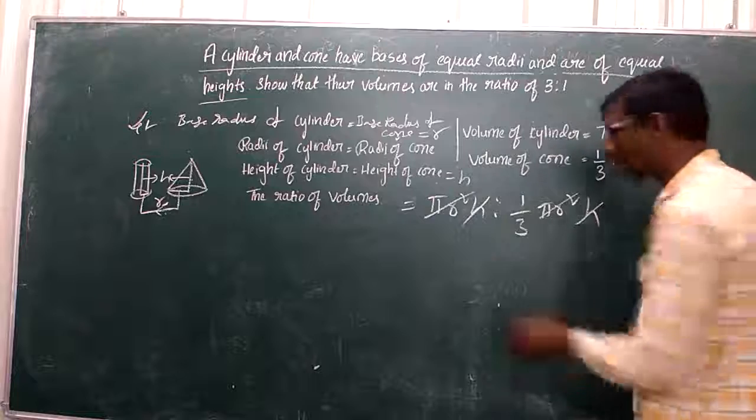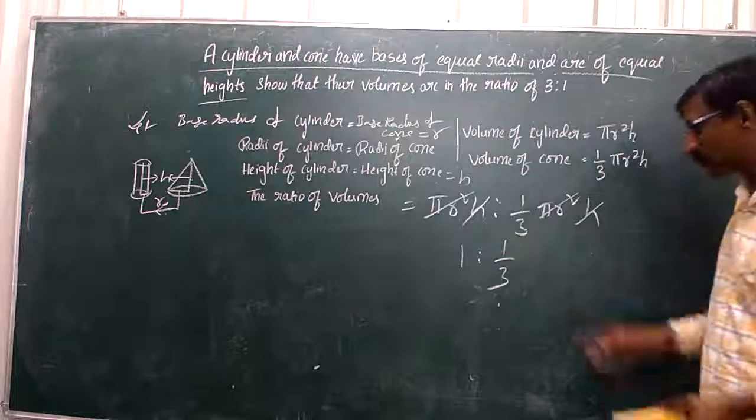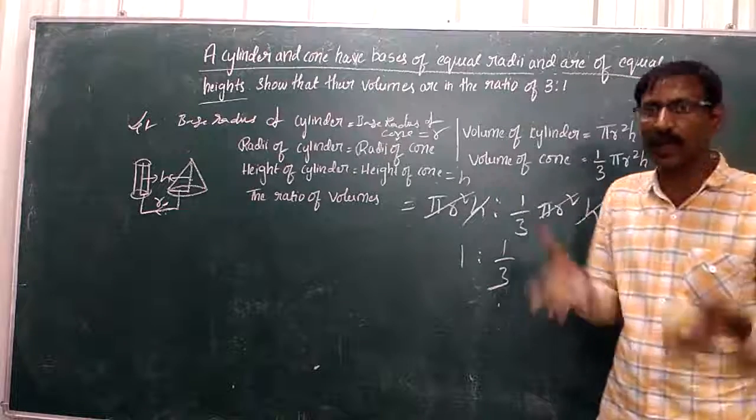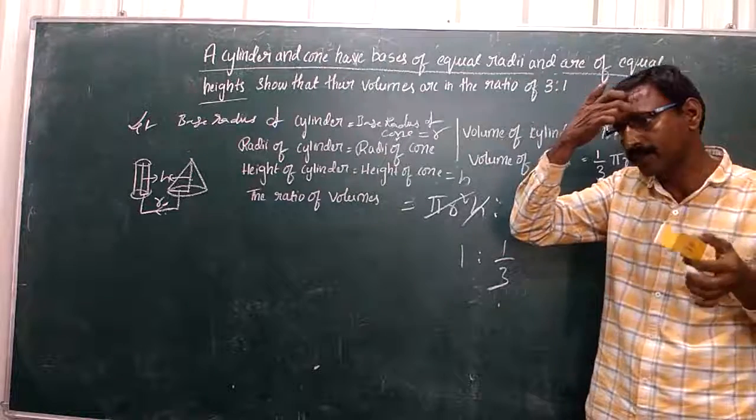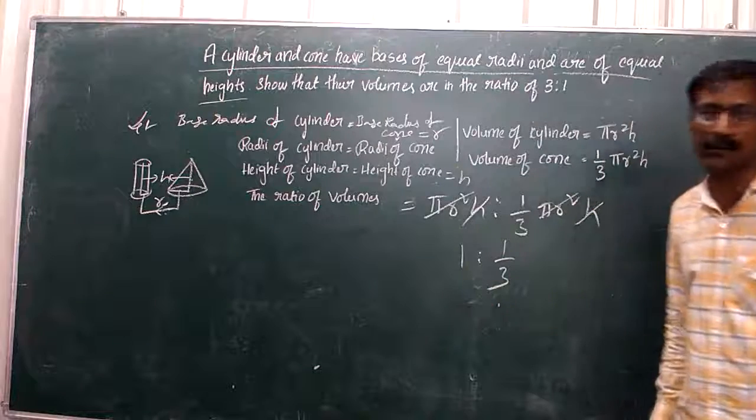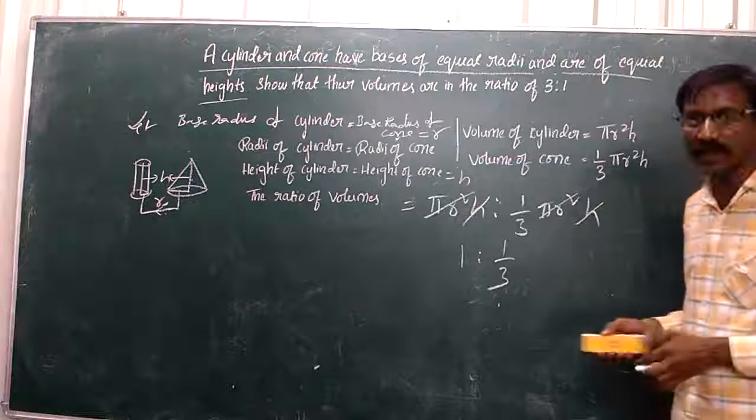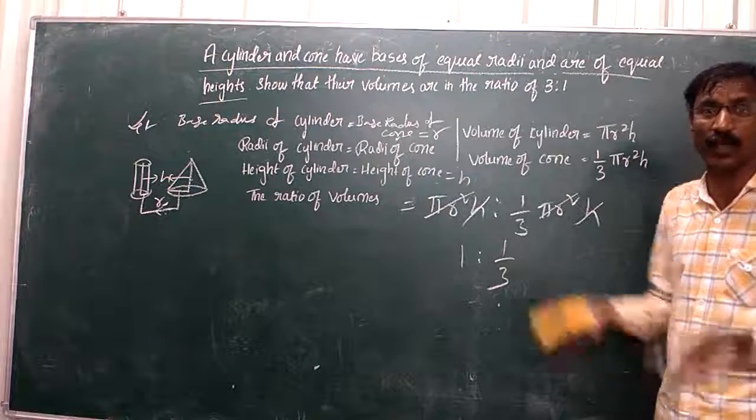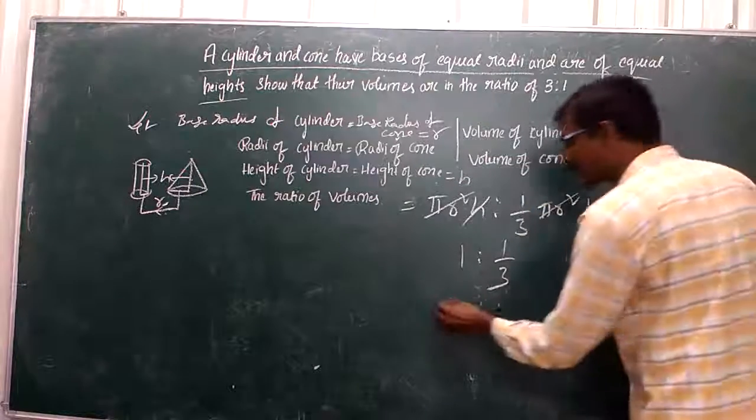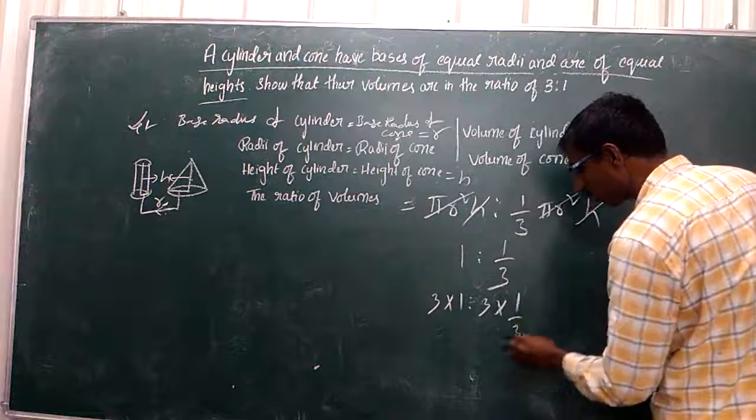1 is to 1/3. When you have a ratio like 1 ratio 1/3, to eliminate the denominator you multiply both terms. Then the ratio increases: 3×1 is to 3×(1/3), which gives 3 is to 1.